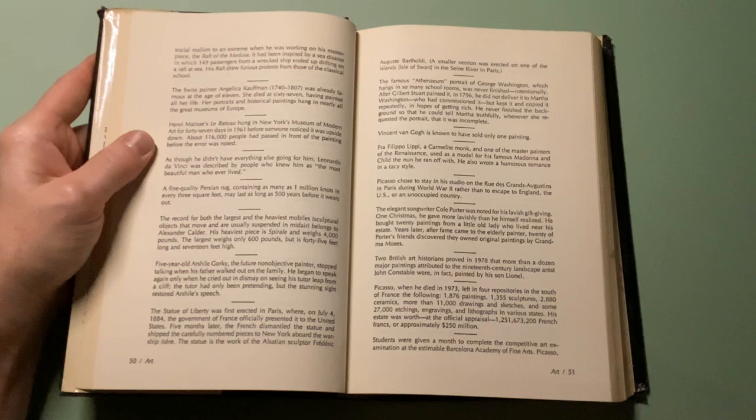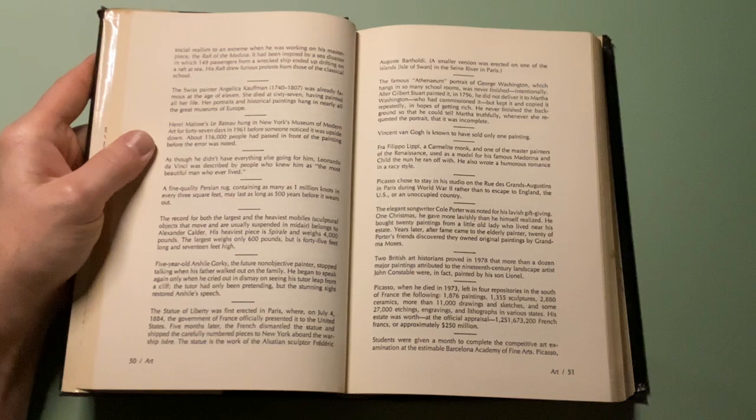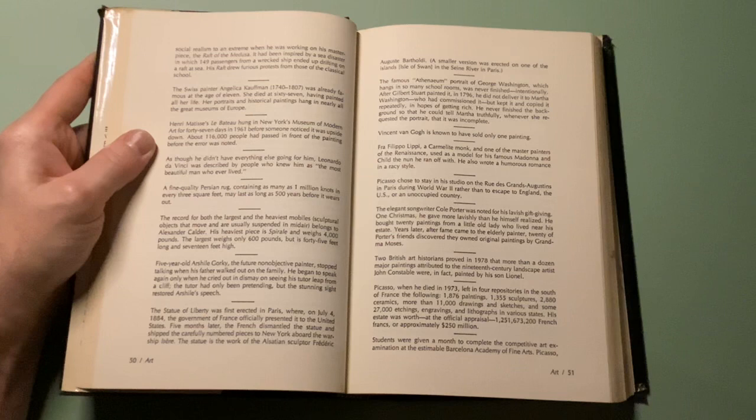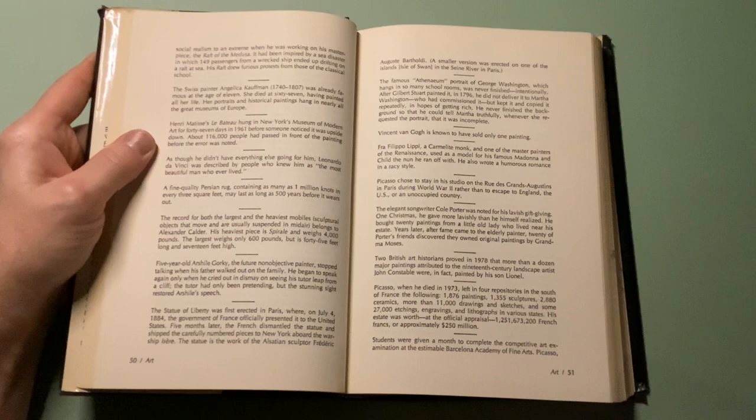The famous Athenaeum portrait of George Washington, which hangs in so many schoolrooms, was never finished intentionally. After Gilbert Stuart painted it in 1796, he did not deliver it to Martha Washington, who had commissioned it, but kept it and copied it repeatedly. In hopes of getting rich, he never finished the background so that he could tell Martha truthfully, whenever she requested the portrait, that it was incomplete.